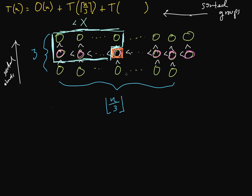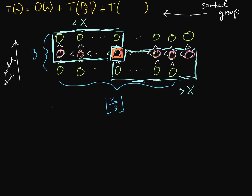So this region is less than x. Similarly on the other side: all those medians are greater than x, and all the elements above those medians are also greater. So all of those are greater than x. We need to figure out how many elements are actually on each side — at least how many are here. We have n/3 columns, and we need ceiling of half of that — ceiling in case we have an even number.